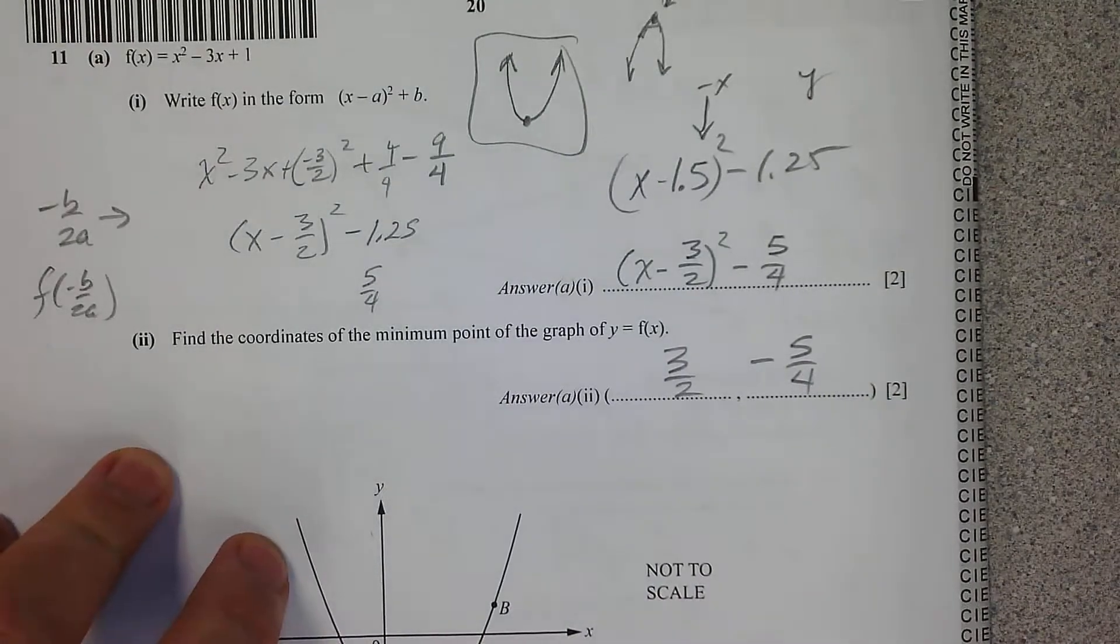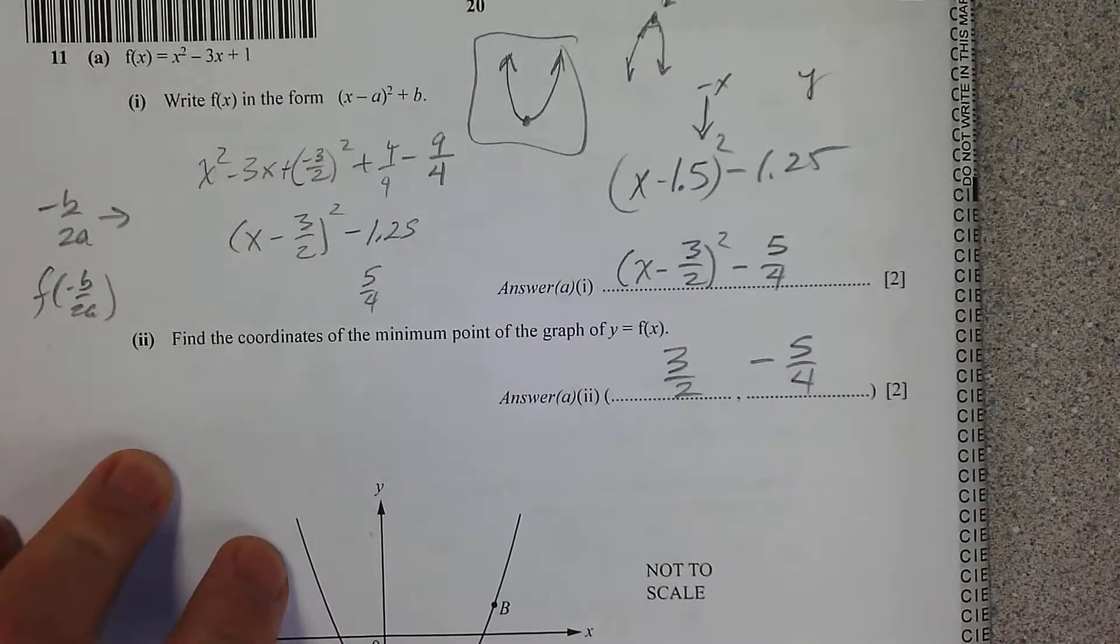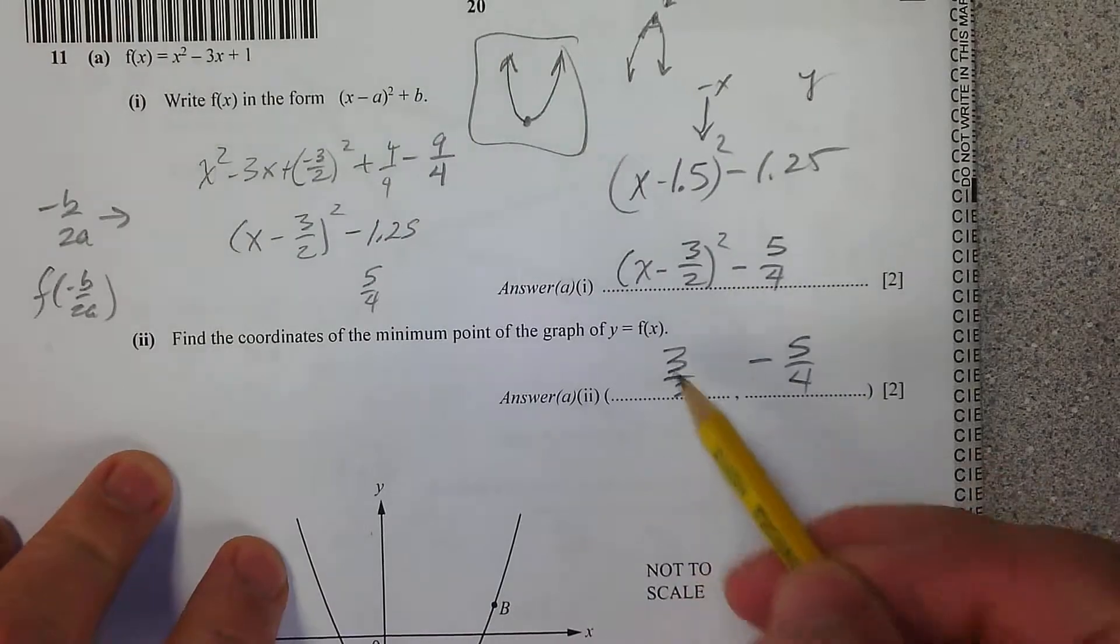So there we go. Now you could put 1.5 and negative 1.25, but remember opposite sign for the x-coordinate. Next up, Buttercup.